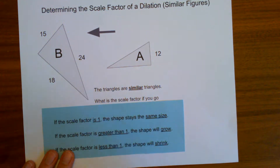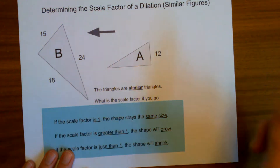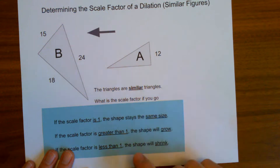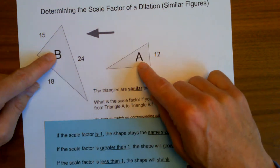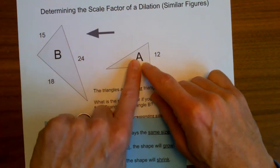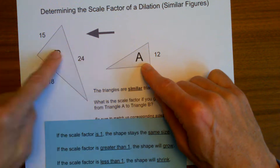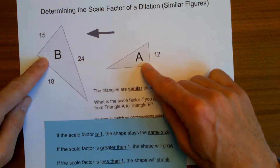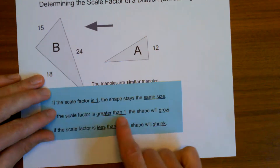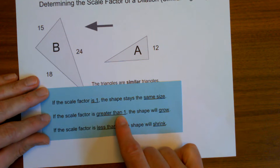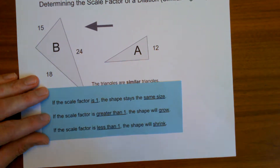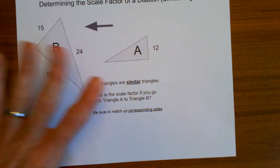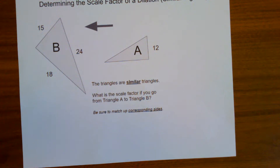It's good to estimate before you start to calculate. I can see I'm going from triangle A to triangle B, and my first triangle is smaller — I'm growing to a larger triangle. So already I know my scale factor needs to be greater than one. If I get something less than one, I know I did it wrong. Think ahead: I need a scale factor that's greater than one.